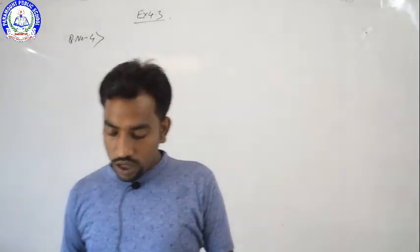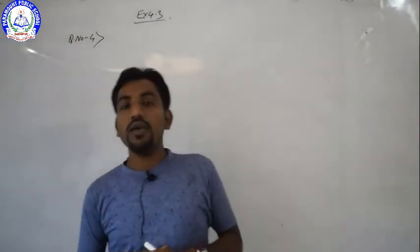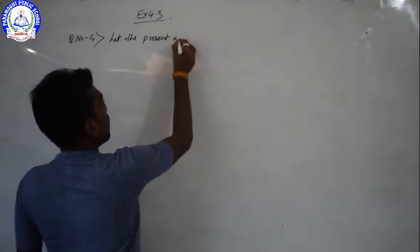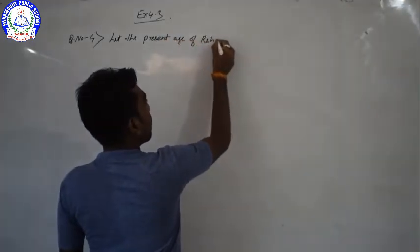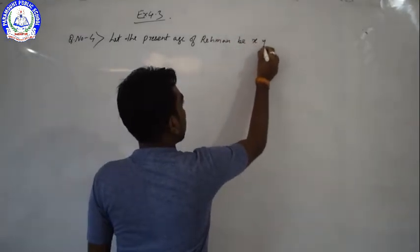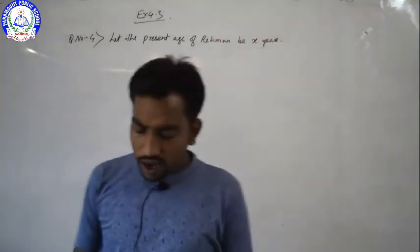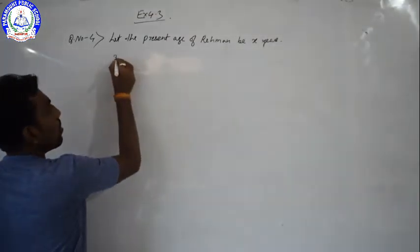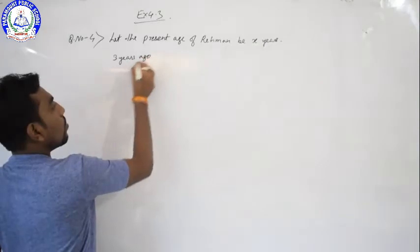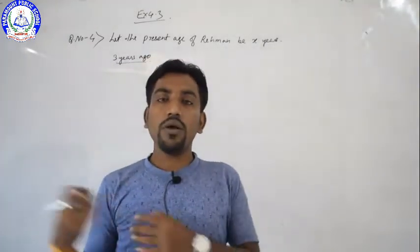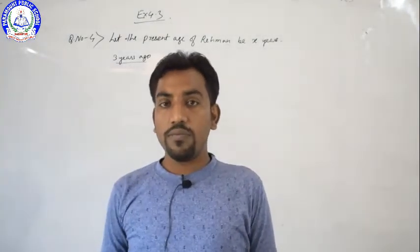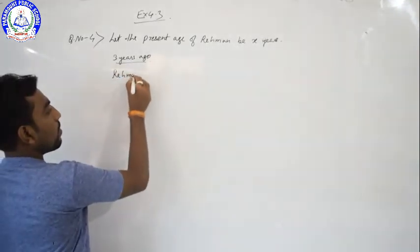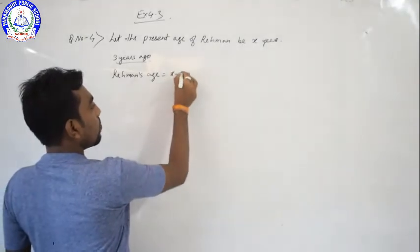Let the present age of Rahman be X years. They are talking about Rahman's age 3 years ago. Since 'ago' means past, and going to the past means subtraction, Rahman's age 3 years ago will be X minus 3 years.